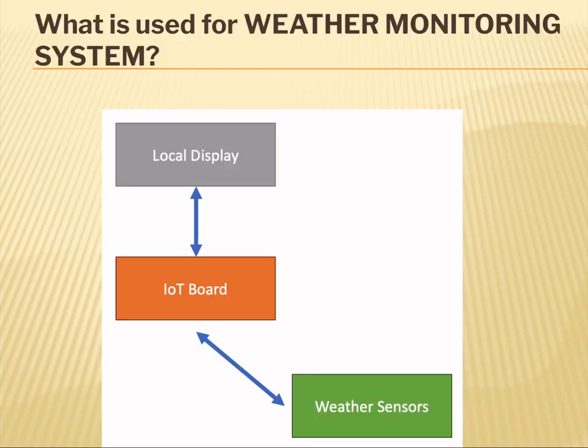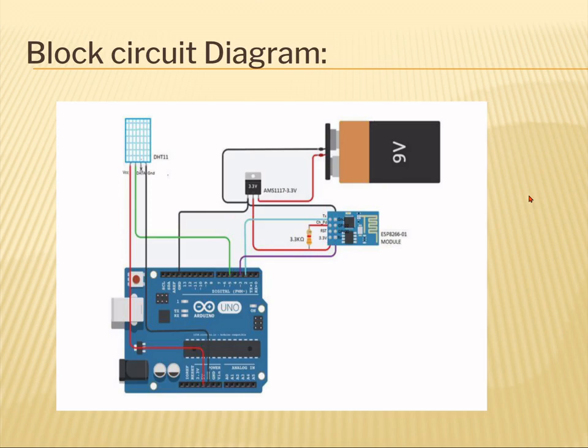What is used for the weather monitoring system? It consists of simple modules such as a local display, an IoT board such as Arduino Uno, and weather sensors such as a rain sensor, humidity sensor, pressure sensor, and temperature sensor. The block circuit diagram is followed by the construction of the circuit diagram in which all the components — different sensors, Wi-Fi modules, etc. — are involved.